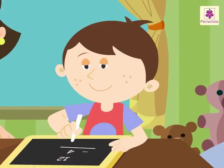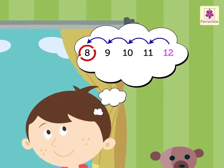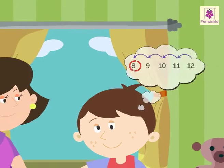First, think of number 12. Then count 4 steps backward from 12. 11, 10, 9, 8. We get the difference as 8. Hence, 12 minus 4 is equal to 8.